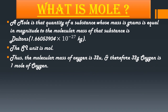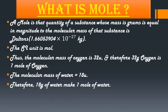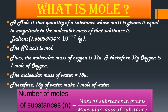For example, the molecular mass of oxygen is 32 u (dalton), so 32 grams of oxygen is 1 mole of oxygen. The molecular mass of water is 18 dalton, so 18 grams of water makes 1 mole of water. The formula to calculate moles is: number of moles (n) = mass of substance in grams ÷ molecular mass of substance. Using this formula, we can calculate the number of moles of any substance.